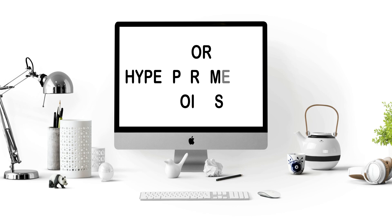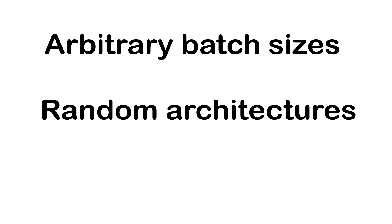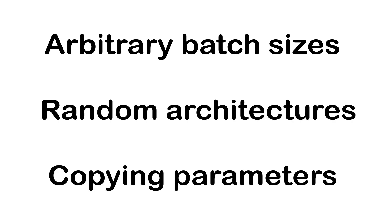Poor hyperparameter choices. Hyperparameters can make or break your model's performance. Common mistakes include using arbitrary batch sizes, picking random network architectures, or copying parameters from unrelated problems. These choices need systematic tuning.